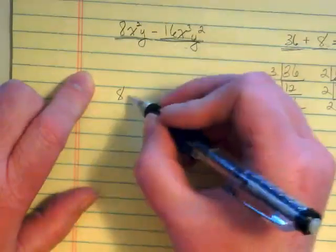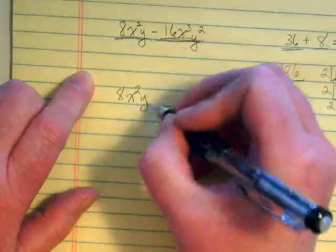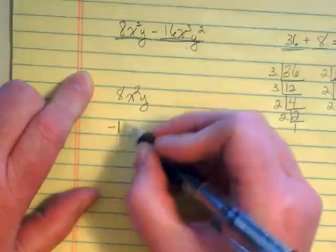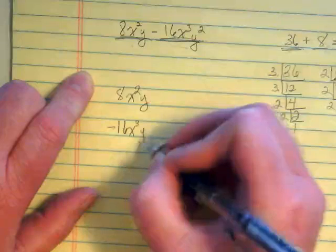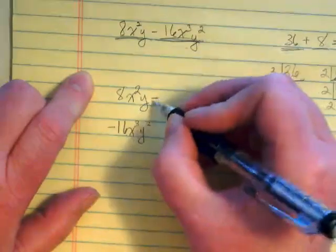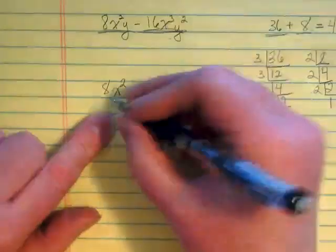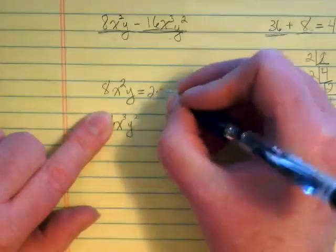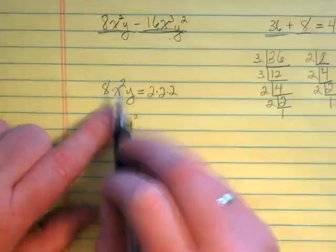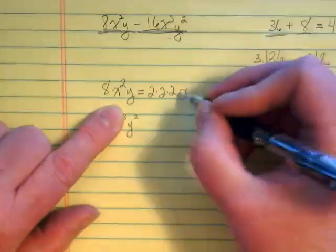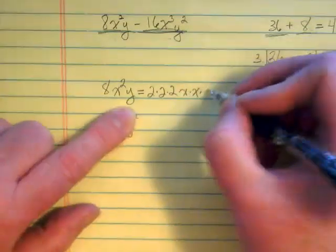and all of the pieces in here so I can pull out or factor out what they have in common. So let's just break this down. 8x squared y and negative 16x to the 3rd y squared. Well, we just factored 8 over here, didn't we? 8 factored is 2 times 2 times 2, x squared would be x times x and a y.